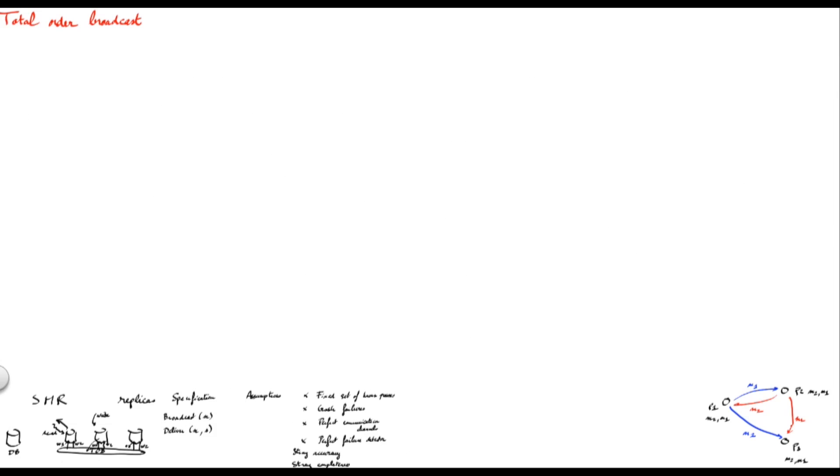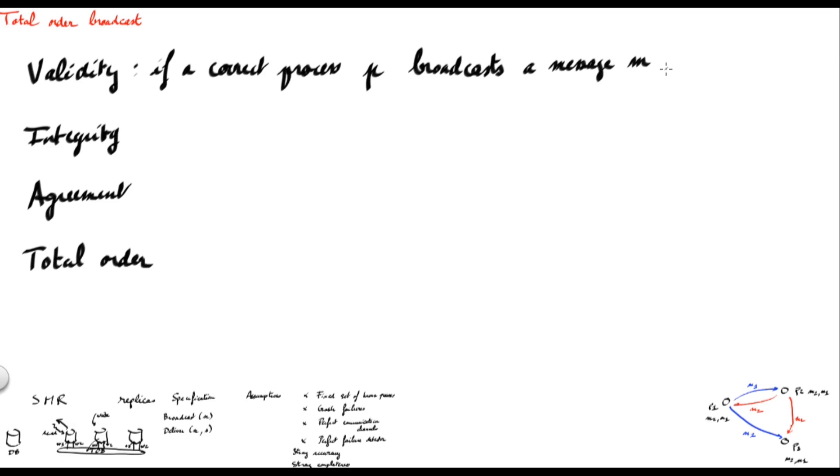Using these two methods, we specify Total Order Broadcast using four properties: Validity, Integrity, Agreement, and Total Order. The Validity property states that if a correct process P broadcasts a message M, then it will eventually deliver M.